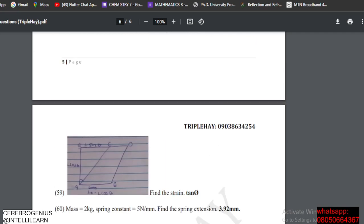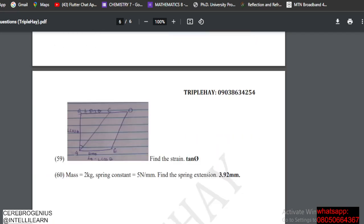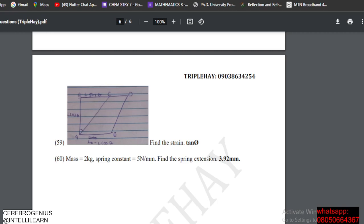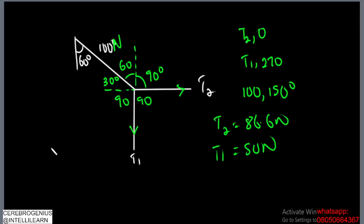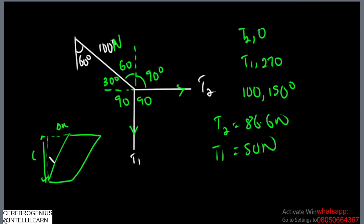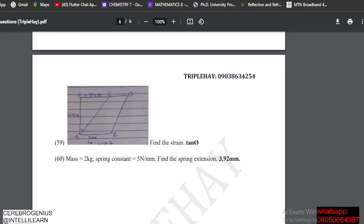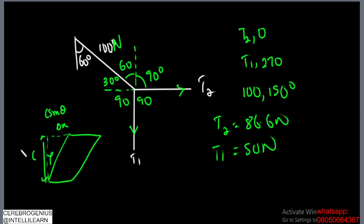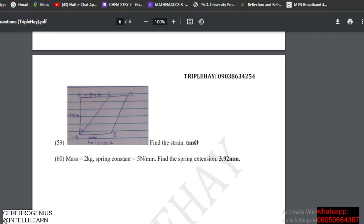To find the shear strain: a body deforms such that the displacement of the top is l sin θ and the original length is l cos θ. The strain γ equals the displacement divided by the original length, which is l sin θ divided by l cos θ — that equals tan θ. So this is correct.